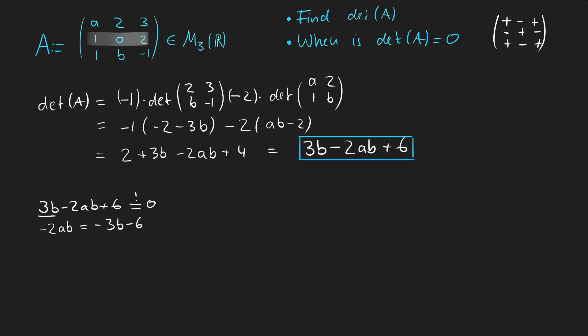Hence we will start by moving 3B and 6 to the other side. Then we get negative 2AB equals minus 3B minus 6. And the next step I will divide by negative 2, which gives us A times B equals 3 over 2 times B plus 3.